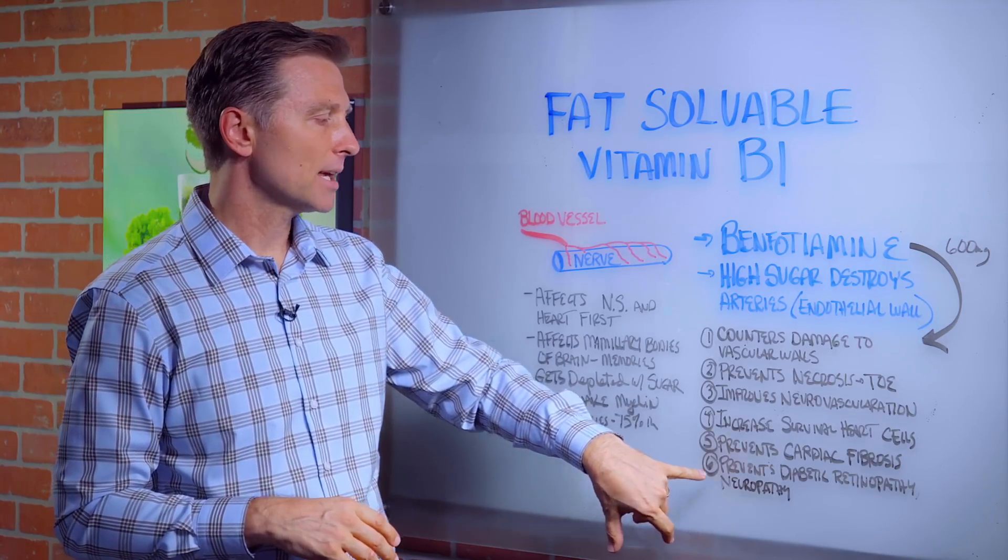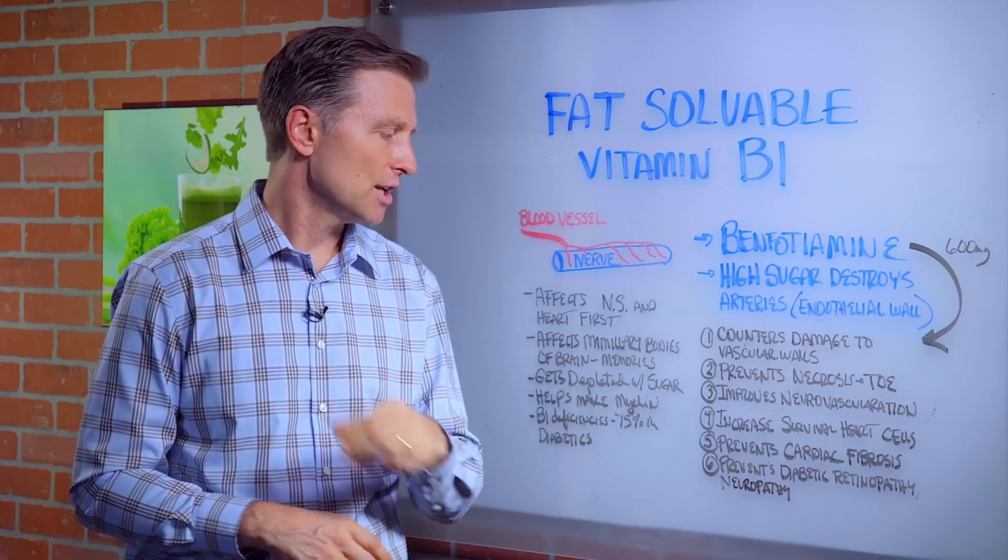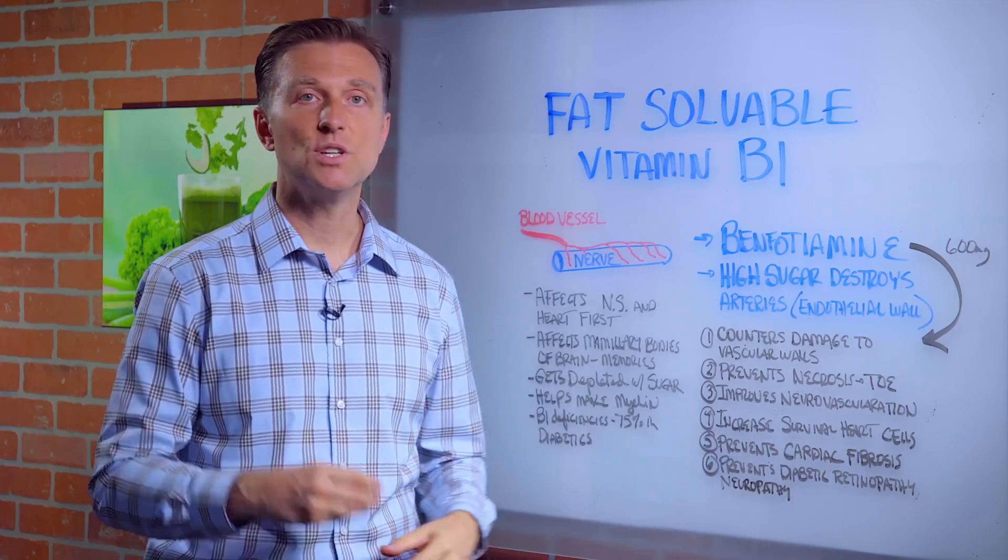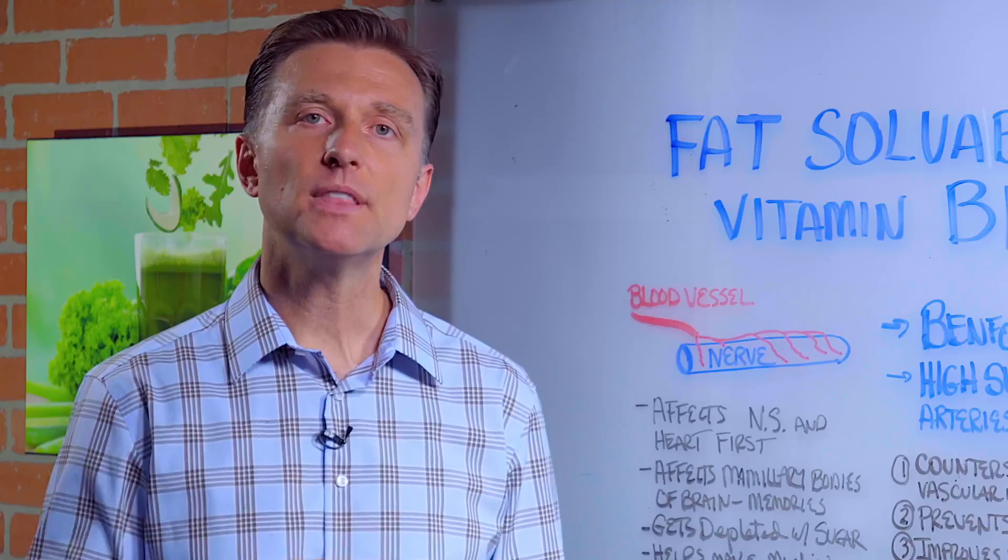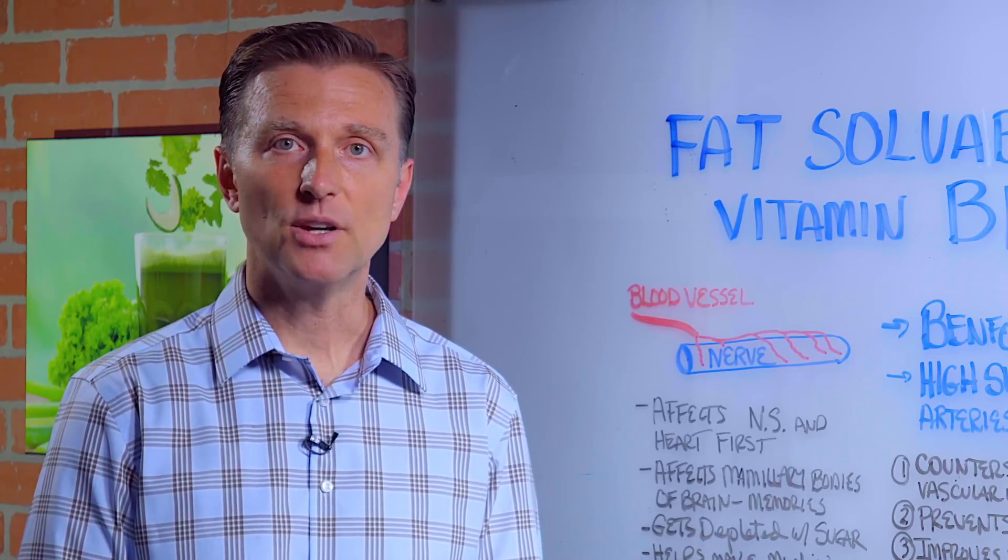B1 prevents diabetic retinopathy. That's damage to the retina of the eye. It also prevents neuropathy, which is damage to the nervous system. Now, you would think this would be in the front of every newspaper in the United States, but it's buried. You have to dig it out.